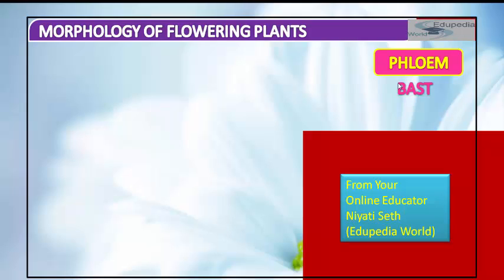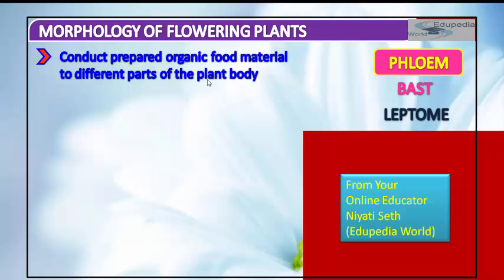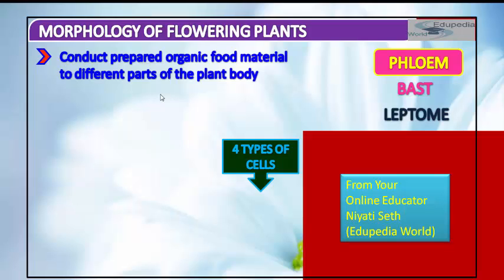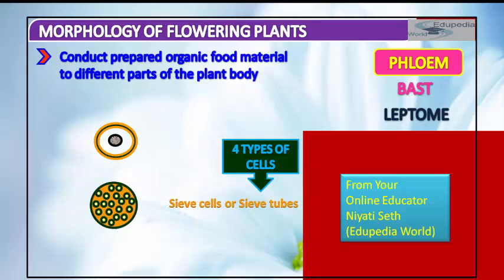Phloem in angiosperms is composed of sieve tube elements, companion cells, phloem parenchyma, and phloem fibers. It conducts prepared organic food material to different parts of the plant body. There are four types of cells: sieve cells or sieve tubes, companion cells, phloem fibers, and phloem parenchyma.